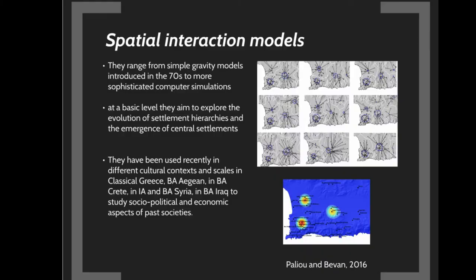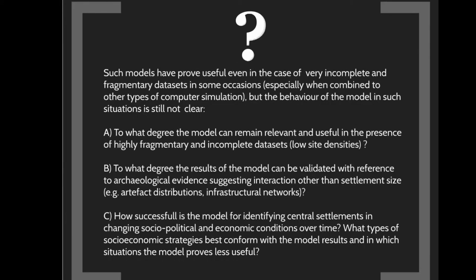The models I'm referring to belong to a special class of computational models known as spatial interaction models. These models range from simple gravity models introduced in the 1970s to much more sophisticated computer simulations developed in the last ten years or so. At a very basic level, these models aim to explore the evolution of settlement hierarchies and the emergence of central settlement distributions. They help us identify important sites within a certain region, and so far they have been used in many different cultural contexts with a relatively high degree of success — for example in classical Greece, the Bronze Age Aegean, Bronze Age Crete, Bronze Age Syria, Bronze Age Iraq, and so on. In some of these cases, as I mentioned, these models have been used with very fragmentary datasets.